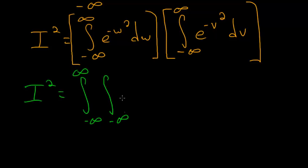And then we have e to the minus w squared times e to the minus v squared dw dv.